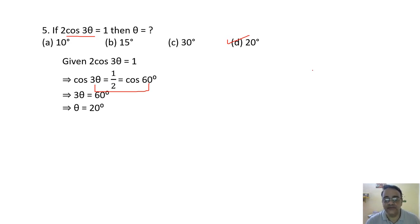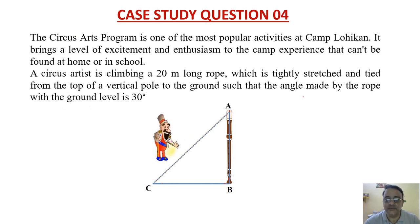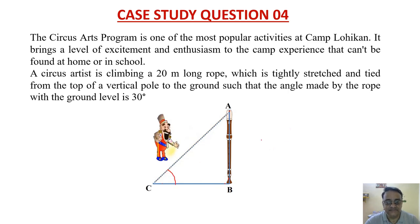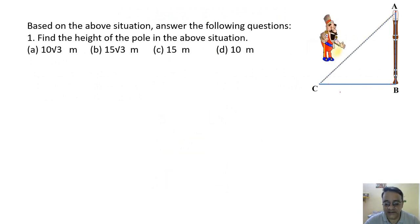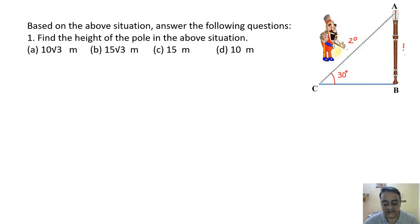Case study question 4: A circus artist is climbing a 20 meter long rope tightly stretched and tied from the top of a vertical pole to the ground, making a 30° angle with the ground. Find the height of the pole. AC = 20m is given, angle = 30°. Using sin 30° = AB/AC: 1/2 = AB/20, so AB = 10 meter. The correct option is option D.